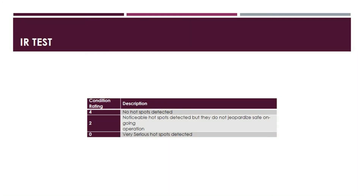The fourth category is the infrared testing, also known as the IR test. This category has only three ratings: 4, 2, and 0. A rating of 4 means no hotspots are detected. A rating of 2 means noticeable hotspots are detected but they do not jeopardize ongoing operations — it does not lead to an unsafe operation. A rating of 0 means very serious hotspots are being detected in this test.